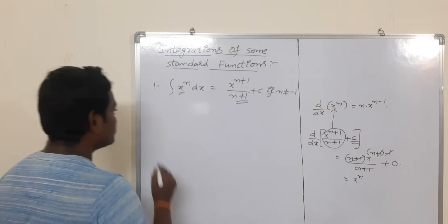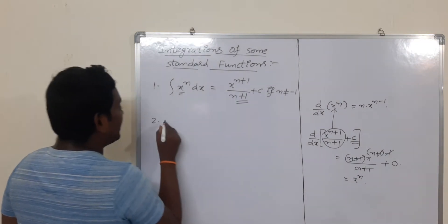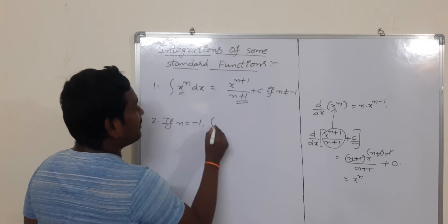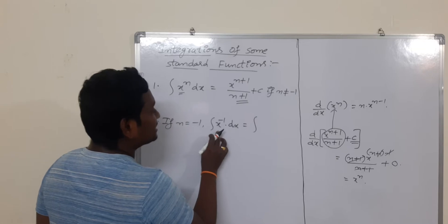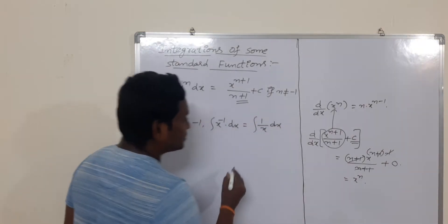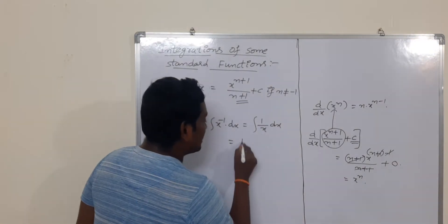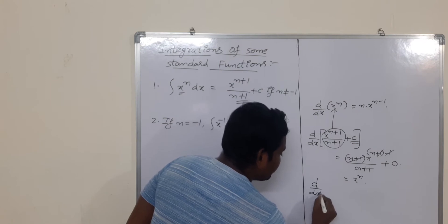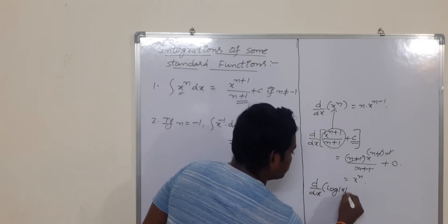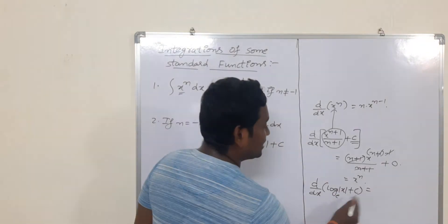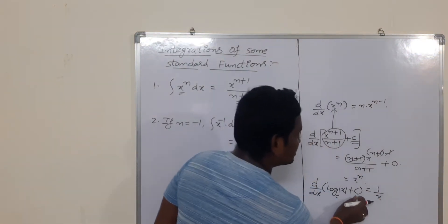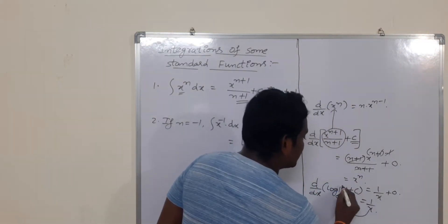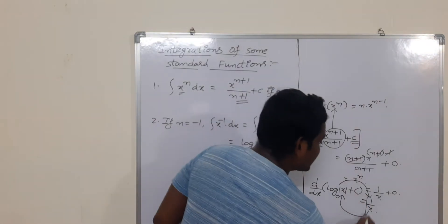If n is equal to minus 1, the above formula becomes integral of x^(-1) dx, which is the same as integral of 1/x dx. Integration of 1/x is nothing but log|x| to the base e, plus c. We already know that differentiation of log|x| base e is 1/x, and differentiation of constant is 0. So this is the derivative for that function, and this is the anti-derivative — if you find integration of 1/x you will get log|x| + c.